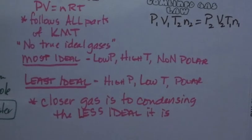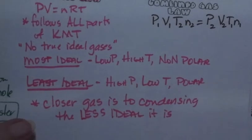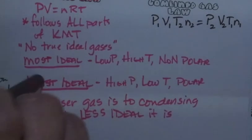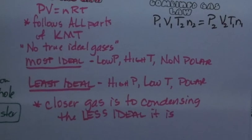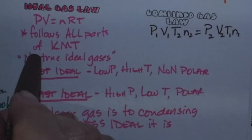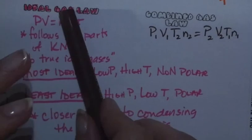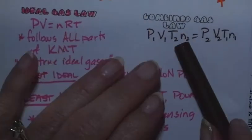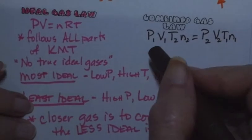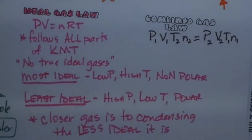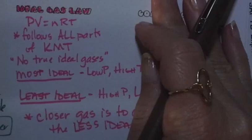We'll work the ideal gas law, and really it's just plugging numbers into an equation. But the big key is being able to explain whether a gas is more or less ideal. The ideal gas law is one gas with one set of variables. The combined gas law is used when you have two pressures, two temperatures, or two volumes — one gas whose conditions you're altering. That's the difference.